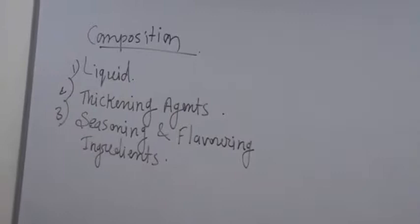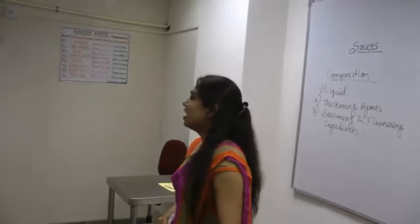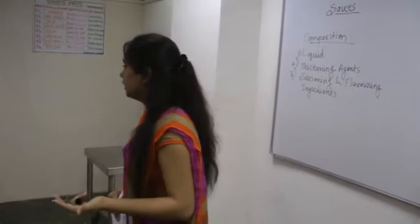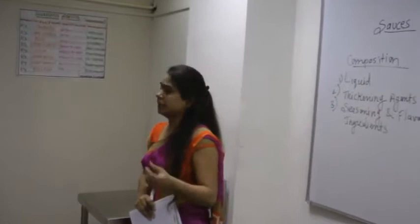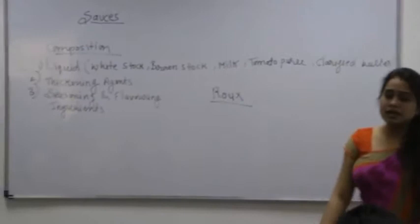Who can tell me seasoning ingredients? Salt and pepper. And flavoring ingredients? Very good. Herbs will also come under flavoring ingredients. We can include any ingredients in that sauce. The flavor has come under flavoring ingredients. If we add vanilla flavor, it will also be a vanilla flavor. So we made roux. It is a mixture of flour and butter.